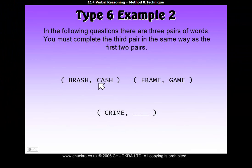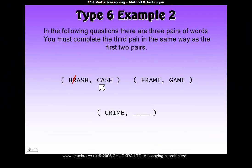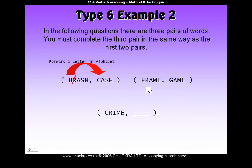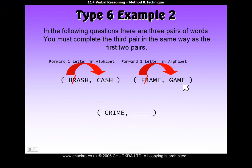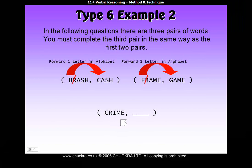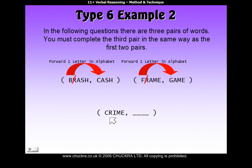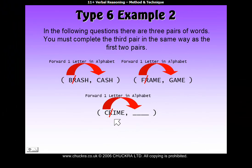C comes after B in the alphabet, and G comes after F in the alphabet. So if you completely ignore the R and just change the B into a C — move it one letter further on in the alphabet — and the same thing for 'frame' to get to 'game': ignore the R and change the F into the next letter in the alphabet, which is G. That means you're using the exact same rule to get 'cash' from 'brash' as you do to get 'game' from 'frame'. So applying that to 'crime': we use the last three letters — I-M-E — ignore the R, and change the C into the next letter in the alphabet, which is D. So we get 'dime'.